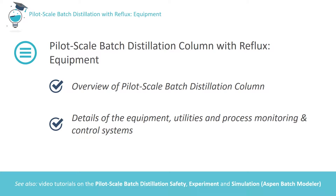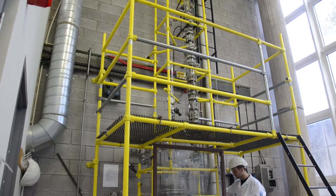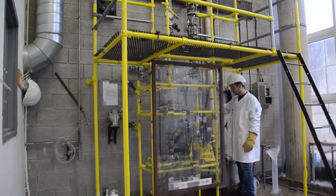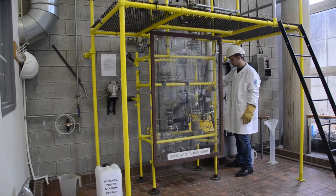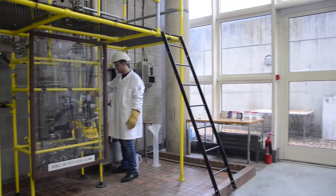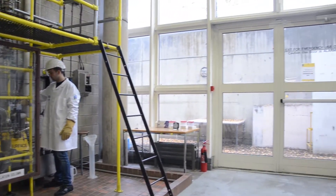There are associated videos on safe operation of the column, on the experimental method and on the use of the Aspen Plus batch simulation tool. Let's begin by looking briefly at the pilot scale batch distillation system which is located within a bonded area in the pilot plant.